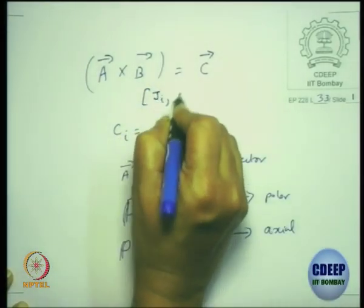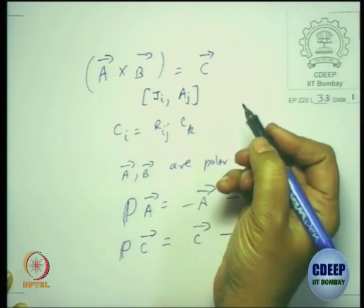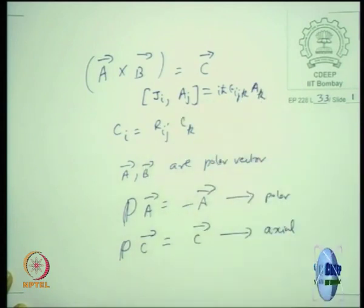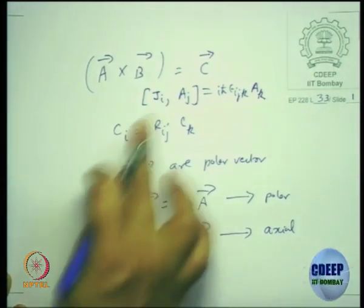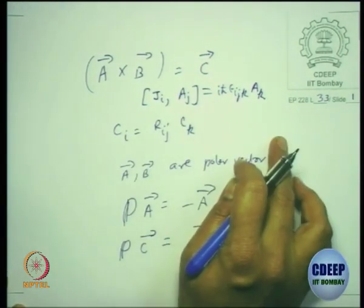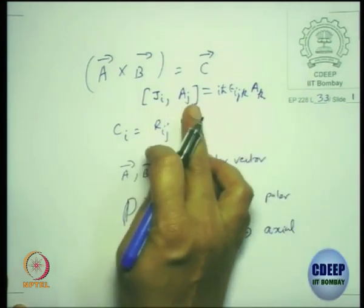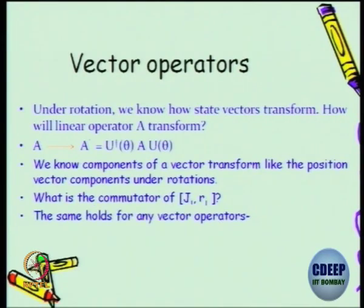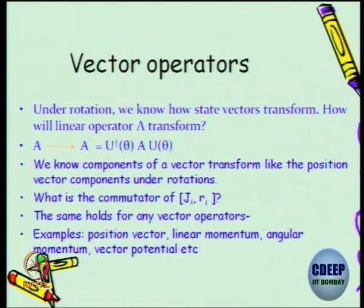That will tell you how to find the commutator of Ji with Aj, which will be i h-bar epsilon-ijk times Ak. I wanted you to check this. I gave you an indication that you know how to do it for r, and instead of r you replace it by A. So this is the commutator and the same holds for any vector operators. Examples are the position vector, linear momentum, angular momentum, and vector potentials — they are all vector operators in quantum mechanics.